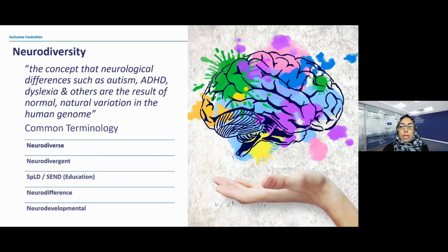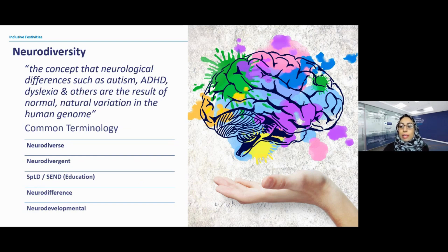It's important to understand that these conditions are lifelong conditions that cannot be cured, but they can be successfully managed. It is estimated that up to one in seven people are neurodivergent.